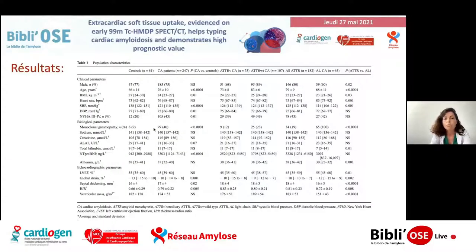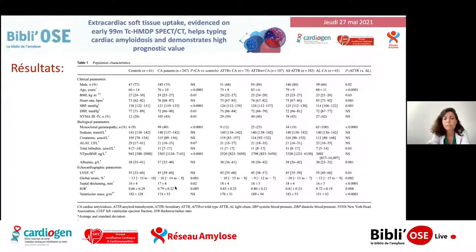La population étudiée est une population d'amylose plus âgée, comme on pouvait s'y attendre, avec des marqueurs cardiaques plus élevés. On avait un NT-proBNP nettement plus élevé comparé aux autres types d'insuffisance cardiaque à fraction d'éjection préservée, des strains plus altérés, des épaisseurs septales un peu plus augmentées.